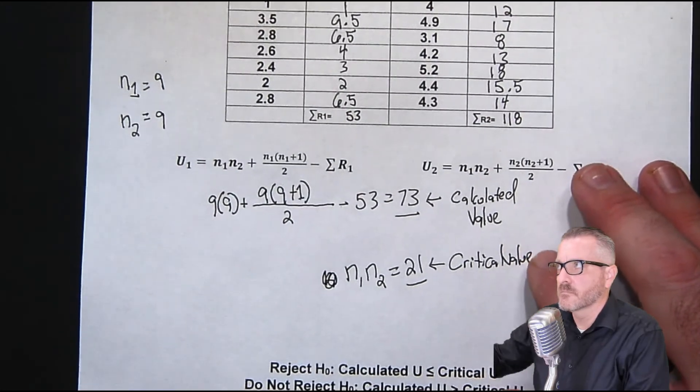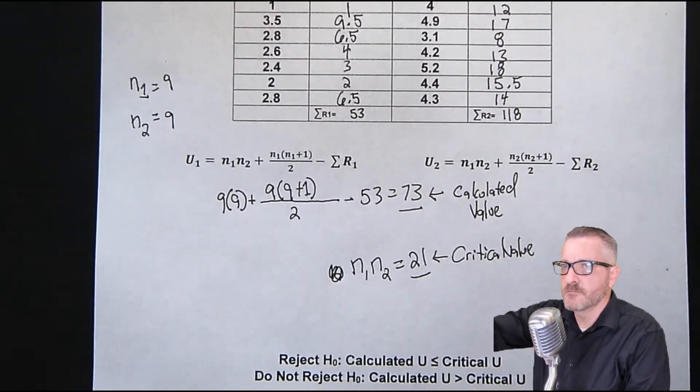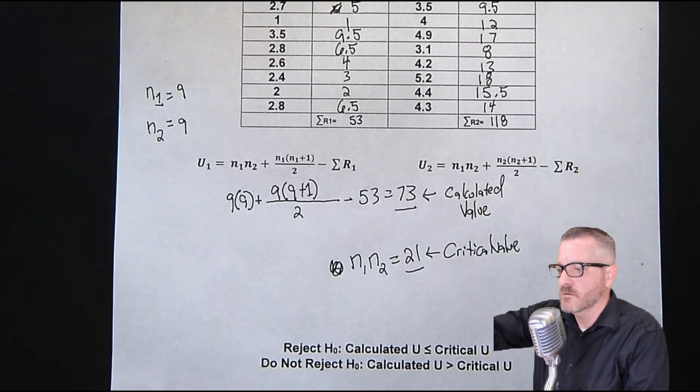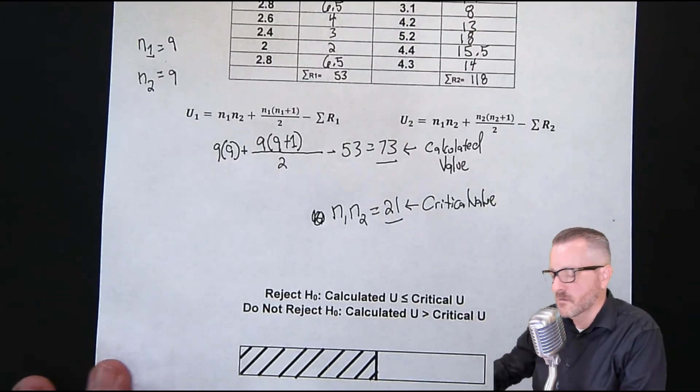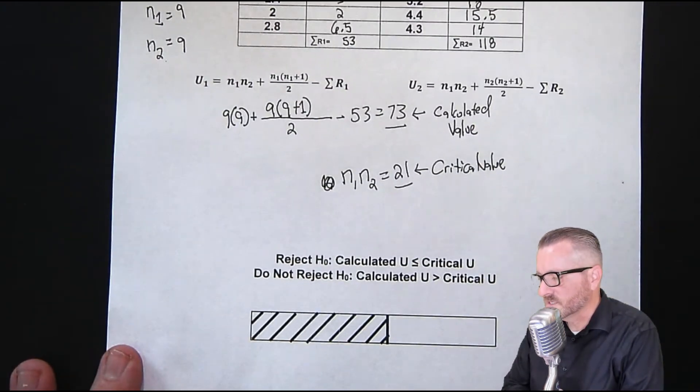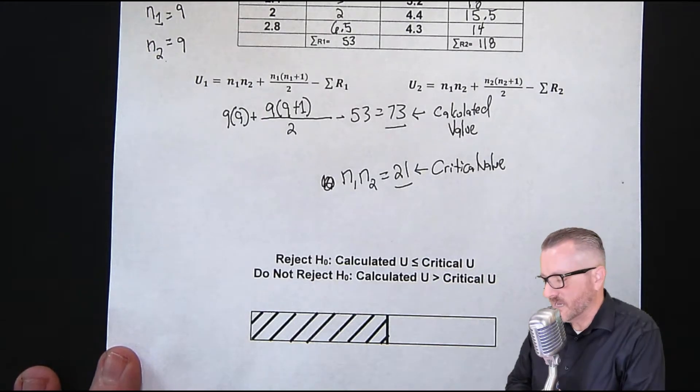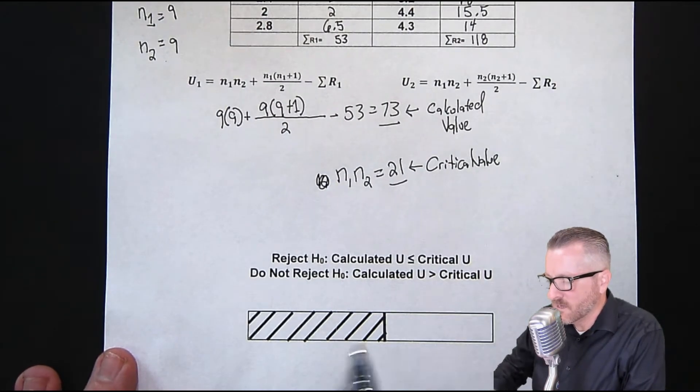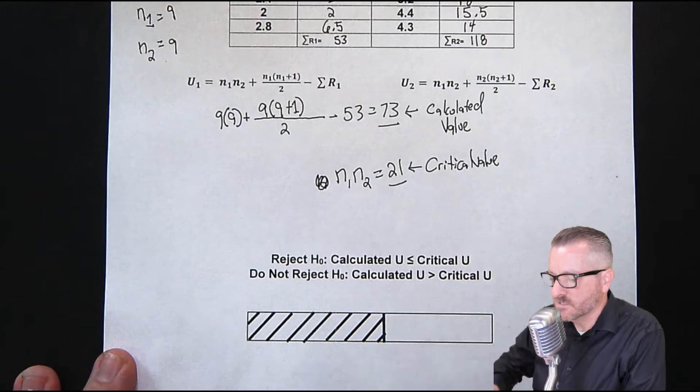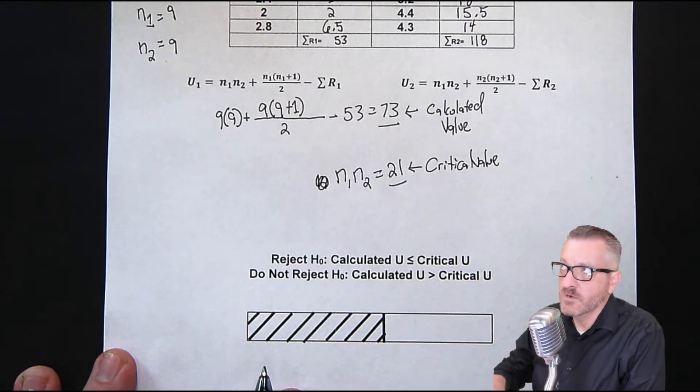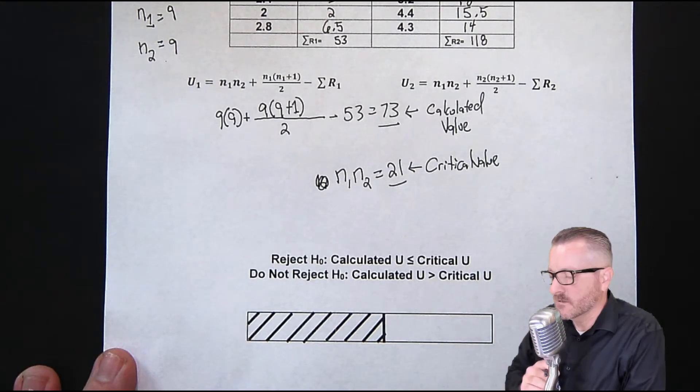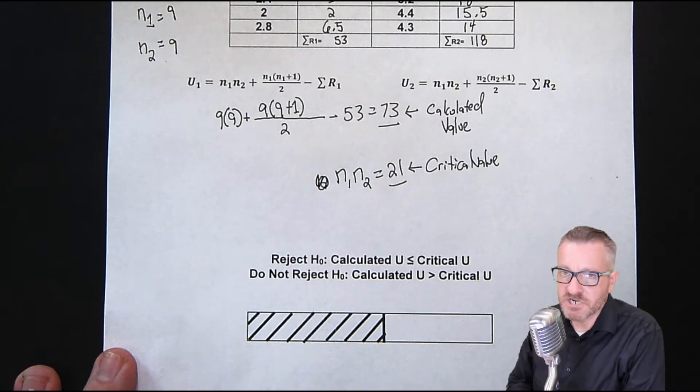So now we're coming to the decision-making part, and you'll notice that I have this rectangle down below. So what I started doing was when I'm describing rejecting a hypothesis, rejecting, I used to use, or I still use this term called rejection zone.